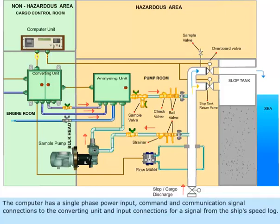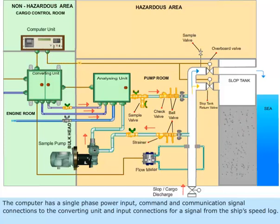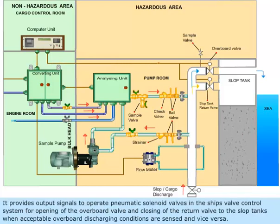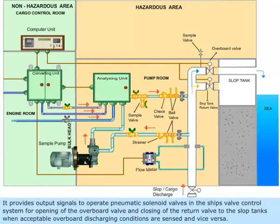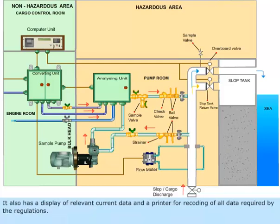The computer has a single phase power input, command and communication signal connections to the converting unit, and input connections for a signal from the ship's speed log. It provides output signals to operate pneumatic solenoid valves in the ship valve control system for opening the overboard valve and closing of the return valve to slop tanks when acceptable overboard discharging conditions are sensed, and vice versa. It also has a display of relevant current data and a printer for recording all data required by the regulations.